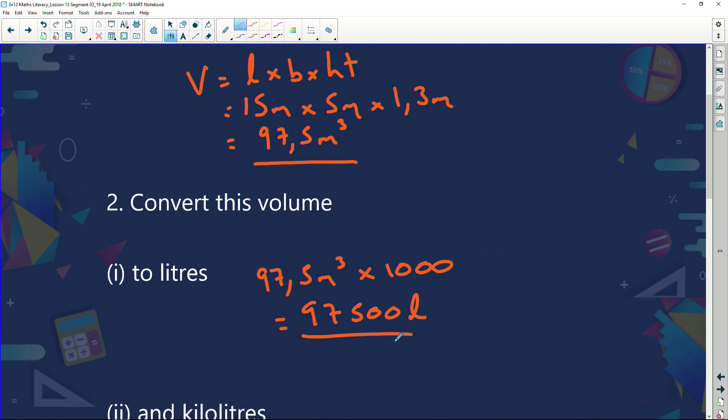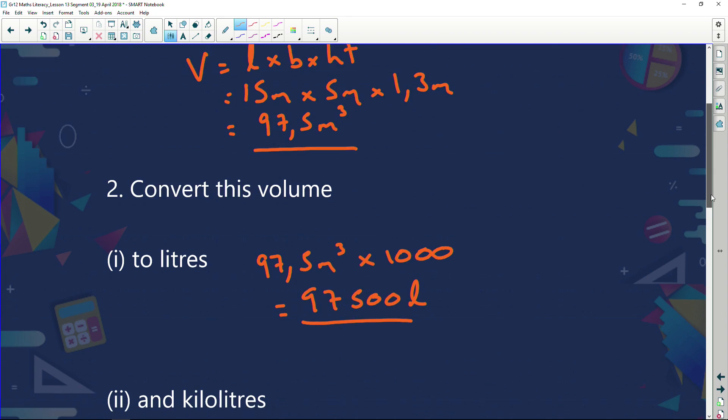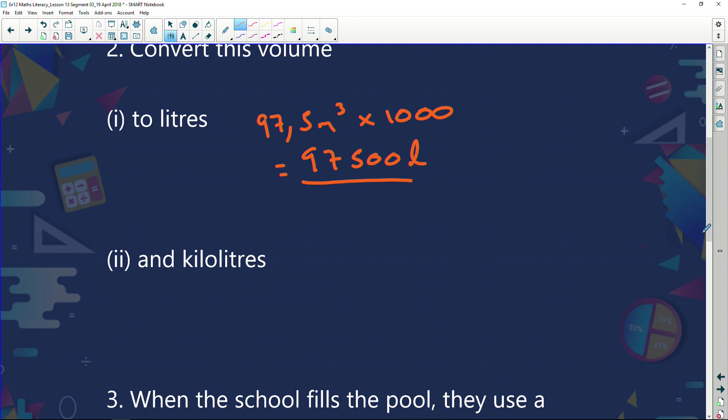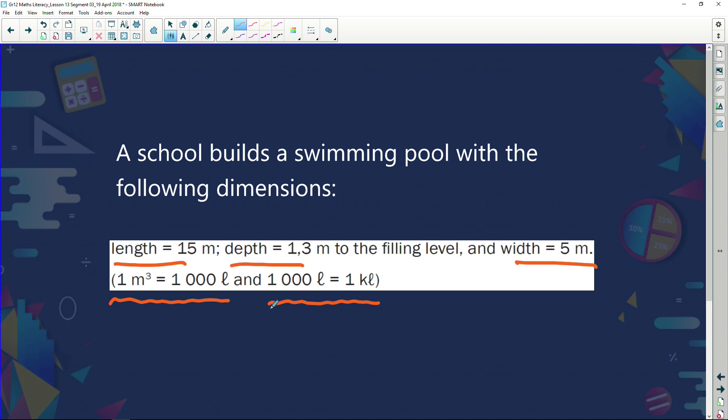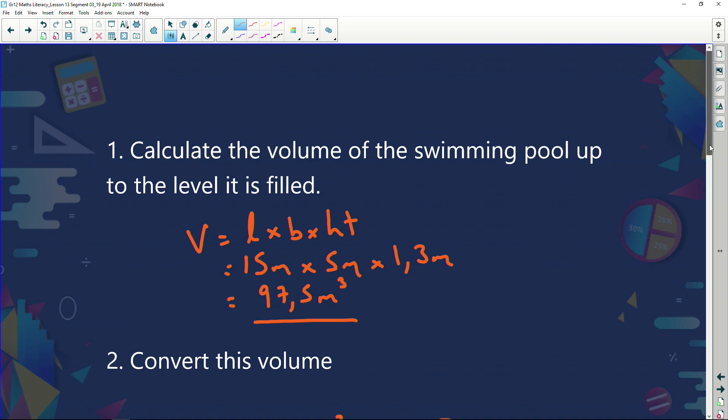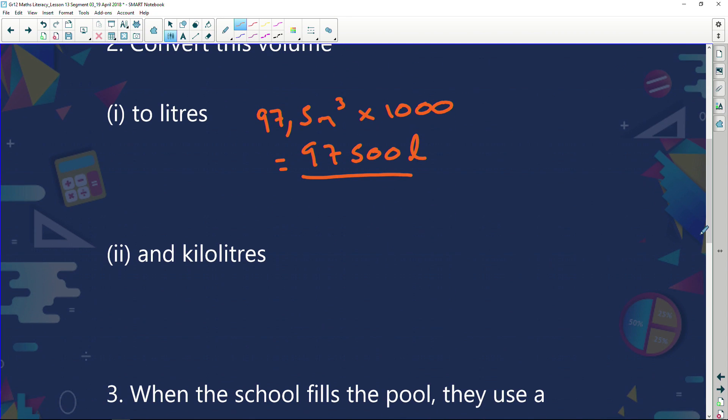It also says convert this volume now into kiloliters. Now, do you remember we did this? And we looked at this information. We said a thousand liters is equal to one kiloliter. So in other words, if I give you 97,500 liters, and I divide it by a thousand, it will tell me how many kiloliters. We divide it by a thousand, and I'm going to land up with 97.5 kiloliters.